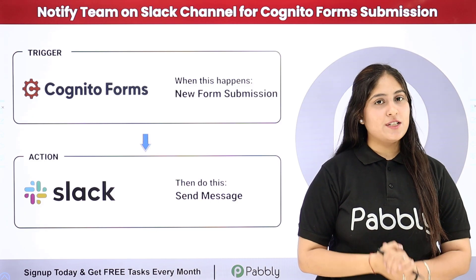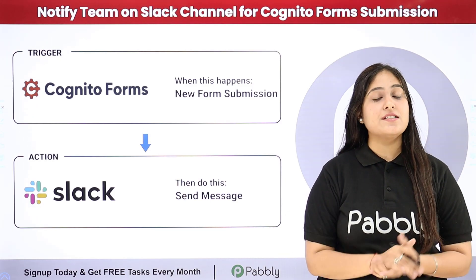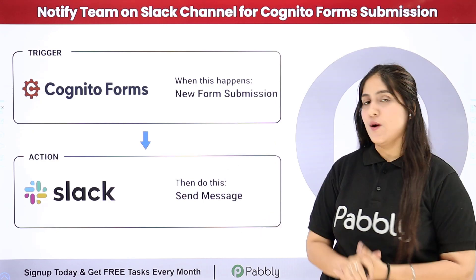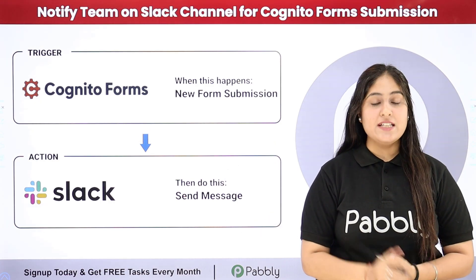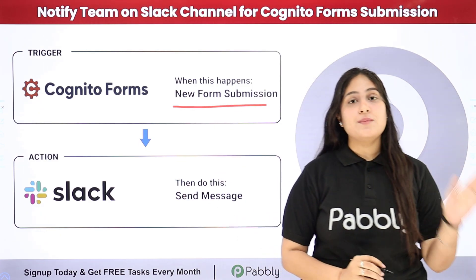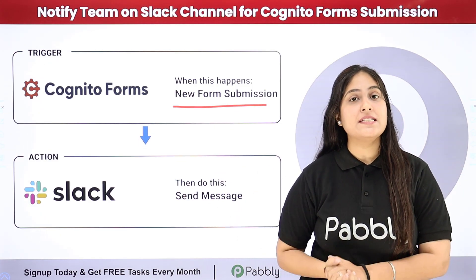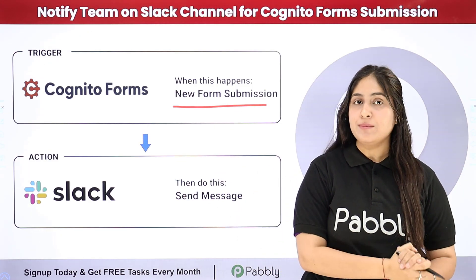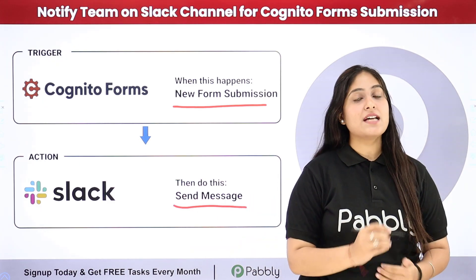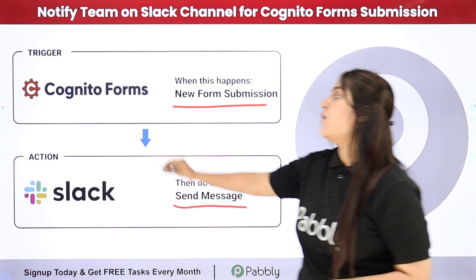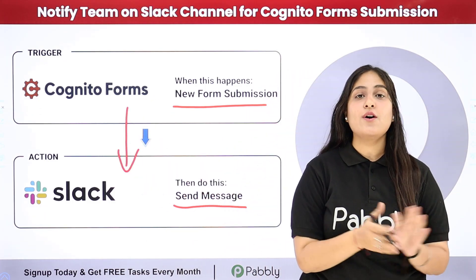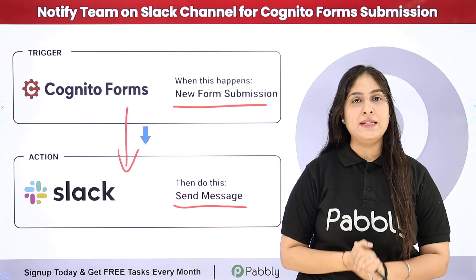I am an owner of a digital marketing agency and I have created a feedback form for my clients using Cognitive Forms. My objective is that whenever I receive a new Cognitive Forms submission, I want to automatically notify my team about the feedback received on a Slack channel. To automate this entire process, I need to connect my Cognitive Forms with my Slack channel using an automation software named Pabbly Connect.